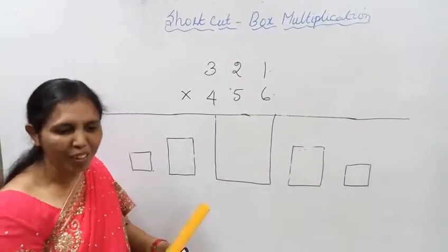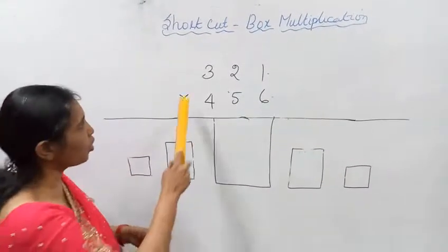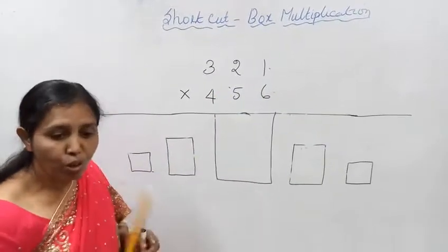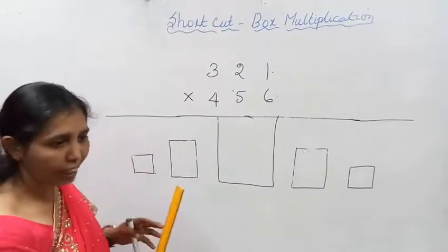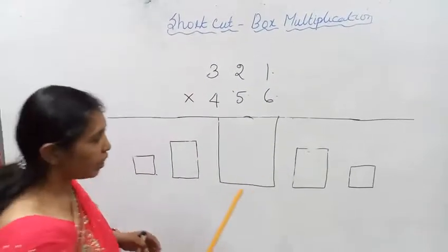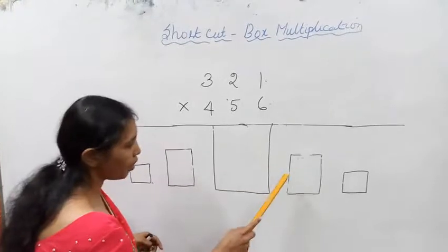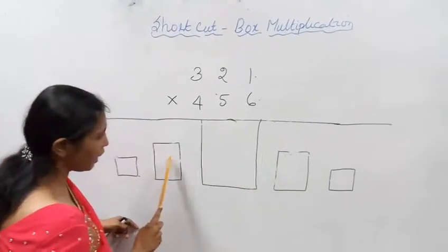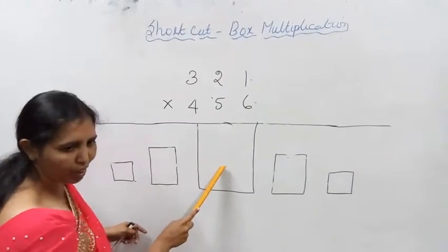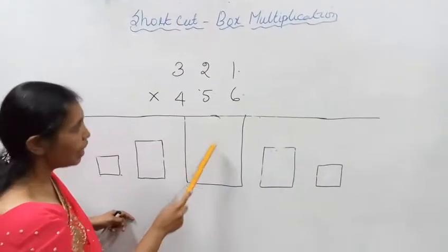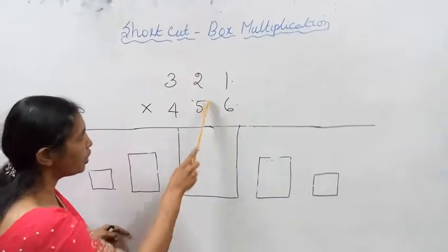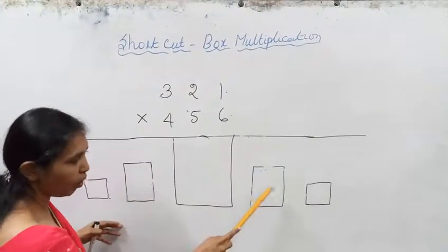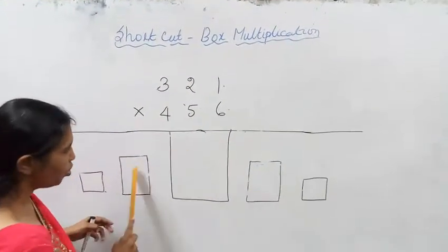Hello students. In my previous video I have taught you 2-digit number by 2-digit number. For 2-digit by 2-digit, what I have done — I put 3 boxes: 1st box, 2nd box, 3rd box.